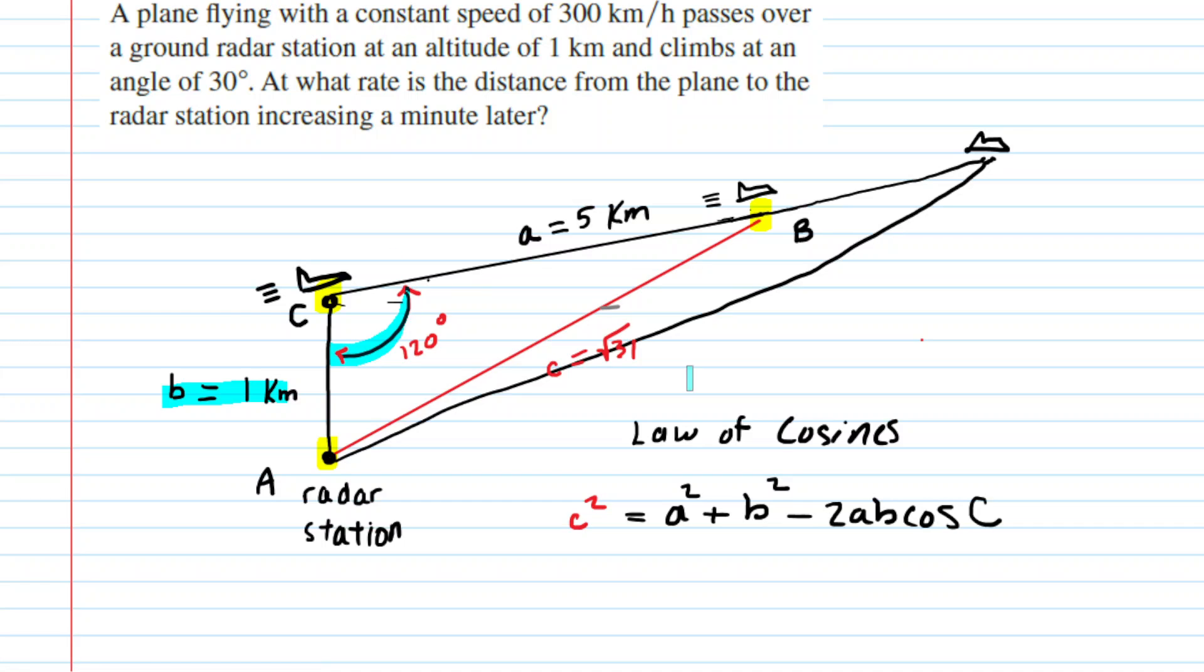But quantities that are not changing in this scenario would be the 1 kilometer as well as the 120 degree angle. So what we'll do is we'll plug in the constant values of 1 kilometer for b, as well as the angle of 120 degrees, because those are constants.